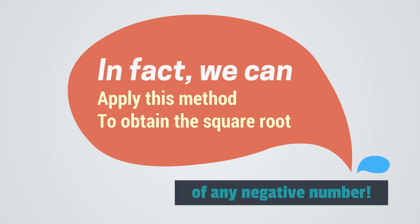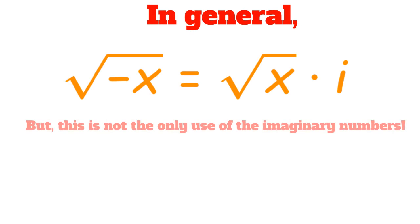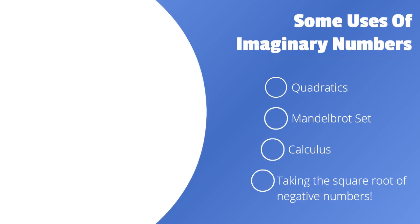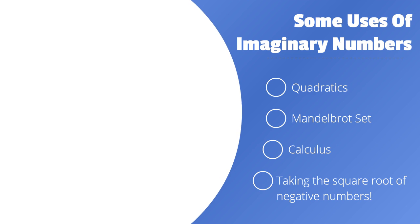In fact, we can apply this method to obtain the square root of any negative number. In general, the square root of negative x is equal to the square root of x times i. But this is not the only use of imaginary numbers. Some uses of imaginary numbers include quadratics, the Mandelbrot set, calculus, and of course taking the square root of negative numbers.